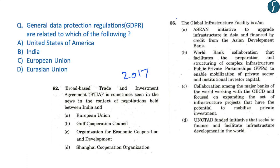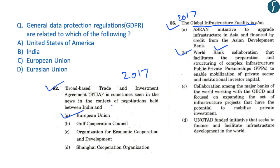From the preliminary examination point of view, previous year 2017 questions included: 'The Global Infrastructure Facility is a...' - the correct answer being that it is a World Bank collaboration facilitating preparation and structuring of complex infrastructure public-private partnerships to enable mobilization of private sector and institutional investor capital. Another 2017 question read: 'Broad-based Trade and Investment Agreement or BTIA is sometimes seen in news in the context of negotiations held between India and...' - the correct answer being the European Union. Such simple questions can be asked based on General Data Protection Rules as well.